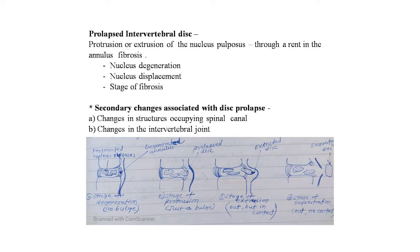The next topic is prolapsed intervertebral disc (PID): protrusion or extrusion of the nucleus pulposus through a rent in the annulus fibrosus. Stages include nucleus degeneration, nucleus displacement, and fibrosis. Secondary changes affect structures occupying the spinal canal and intervertebral joints. Images show four stages: degeneration with no bulging, protrusion with bulging beginning, extrusion where disc is out but still in contact, and sequestration where the disc is detached from ligaments.